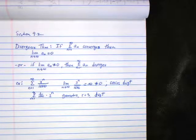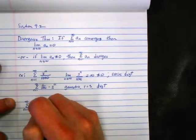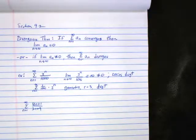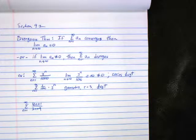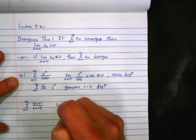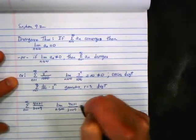How about the sum from n equals 1 to infinity of (4n+1)/(3n+9)? Diverges. If you take the limit as n goes to infinity of (4n+1)/(3n+9), the limit is 4/3, which is not zero. So we can use the divergence theorem here.